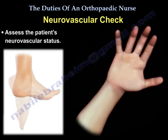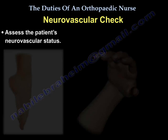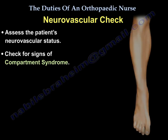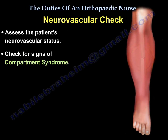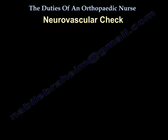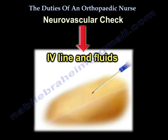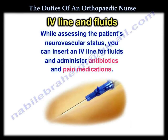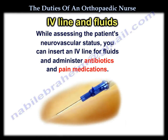Neurovascular check: assess the patient's neurovascular status and check for signs of compartment syndrome. While assessing the patient's neurovascular status, you can insert an IV line for fluids and administer the required antibiotics and pain medication.